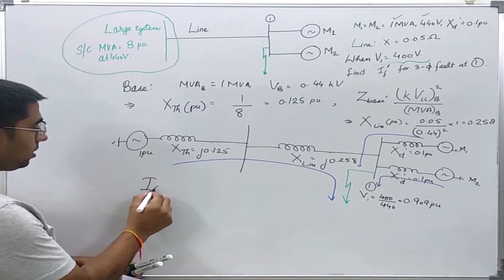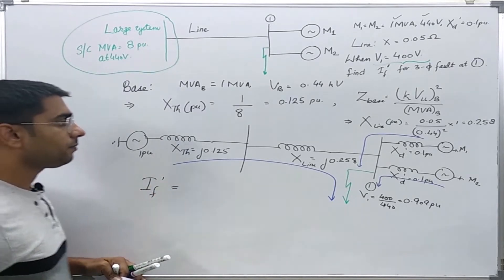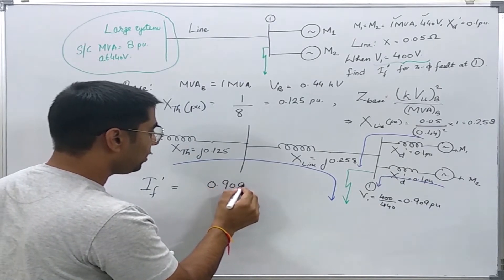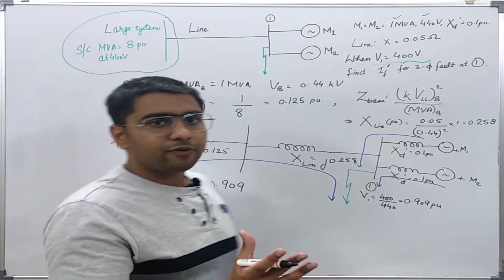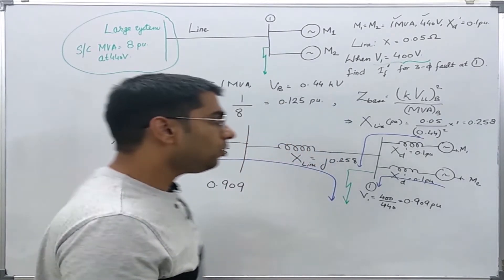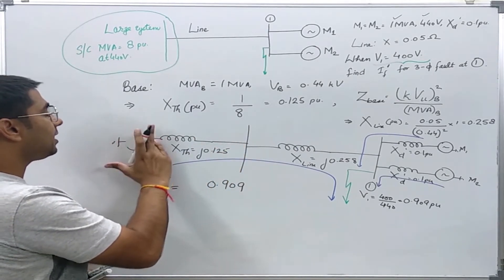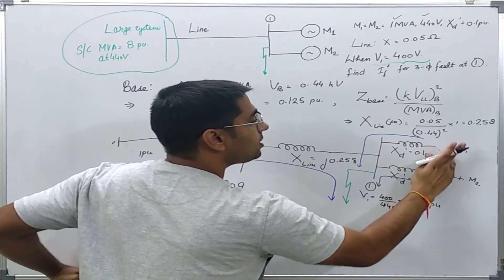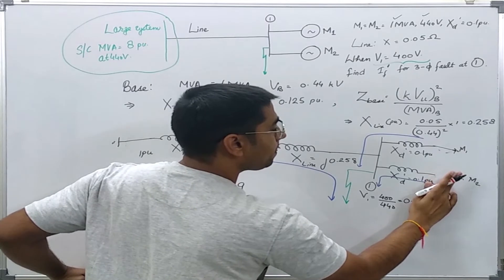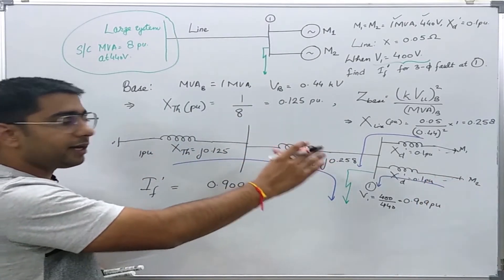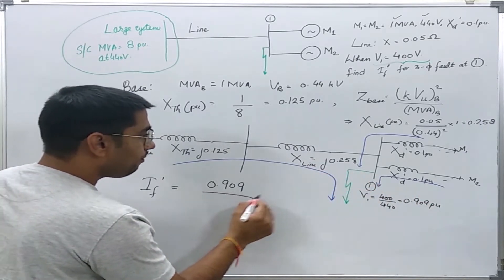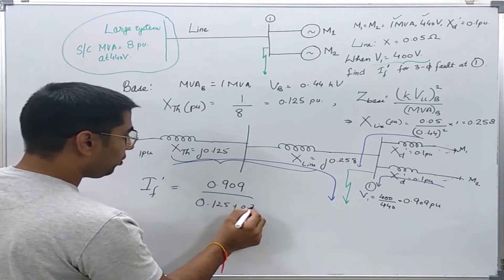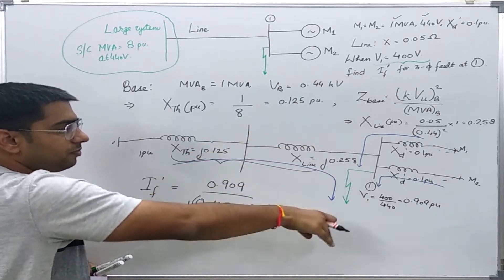Using the Thevenin method, deactivating all other sources, the fault current IF' is found from the pre-fault voltage of 0.909 per unit. The contribution from the power system side is 0.909 divided by (0.125 + 0.258) per unit.